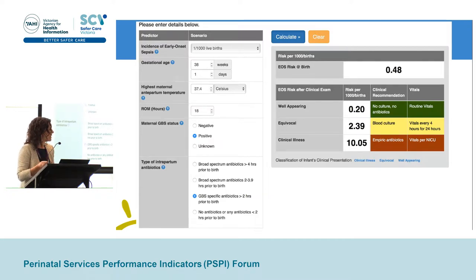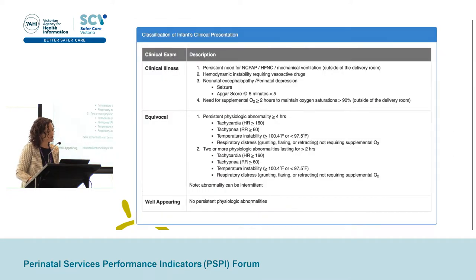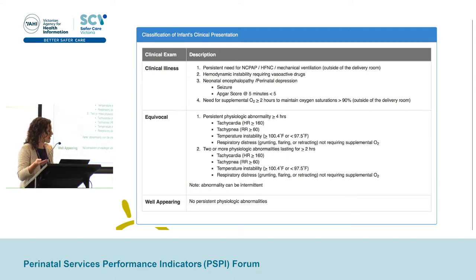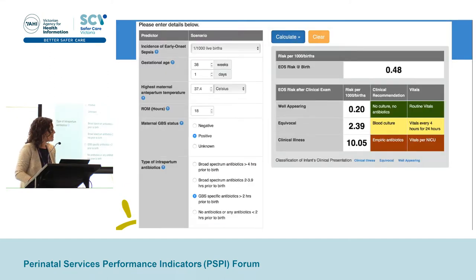The calculator then modifies that risk according to the infant's clinical condition. It gives very clear guidance on how to categorize the infant's condition into one of three categories: clinical illness, an equivocal state, or well-appearing, with very specific criteria for how to define each of those states. It's an iterative process where when a baby is born, you enter the data into the calculator, make your clinical assessment, and decide which category the baby falls into. The calculator then gives a clinical recommendation and indications for monitoring.